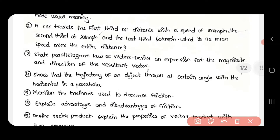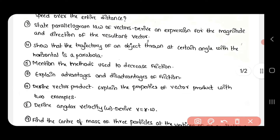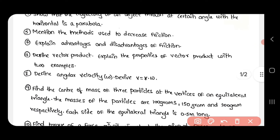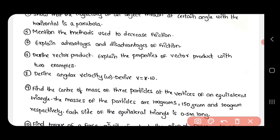The 3rd and 4th expected questions are about the Parallelogram of Vectors. The 5th and 6th expected questions include: mention the methods used to decrease friction, and explain the advantages and disadvantages of friction. The 7th question is: define vector properties and explain the properties of vectors. The 8th question is on angular velocity, which is to be derived.